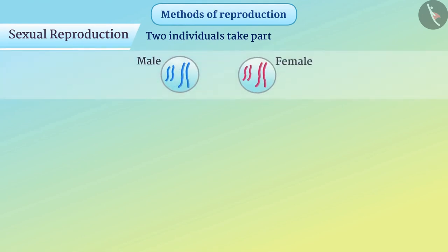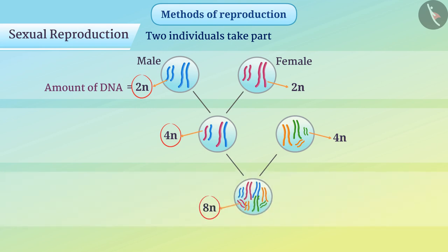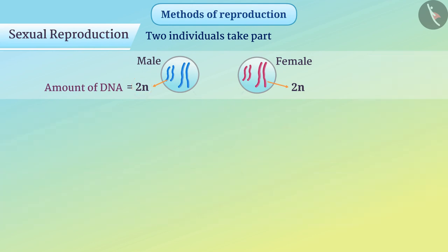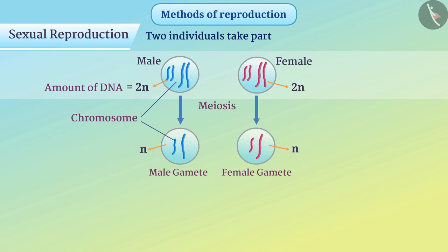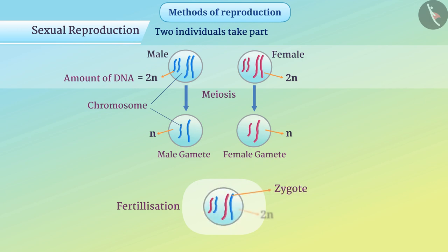If male and female both take part in sexual reproduction, the amount of DNA that the offspring get will be twice that of the individual DNA, and the amount of DNA would go on increasing over generations, which could reduce control over cellular organization. To solve this problem, there are distinct organs for sexual reproduction which reduce the number of chromosomes to half through the process of meiosis. Due to this, male gametes and female gametes are produced which contain half the DNA. During fertilization, the male gamete combines with the female gamete to produce a zygote in which the amount of DNA is restored.